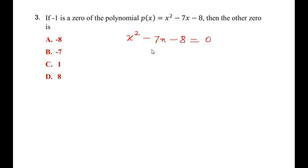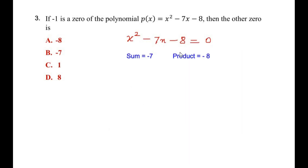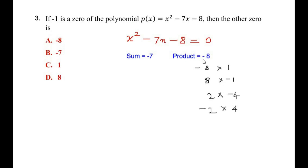For this quadratic polynomial we need the product as negative 8 and the sum as negative 7. Let us find all factor combinations of negative 8: negative 8 times 1, 8 times negative 1, 2 times negative 4, and negative 2 times 4. Trying the first combination, negative 8 plus 1 gives a sum of negative 7, which satisfies both the product and sum conditions.